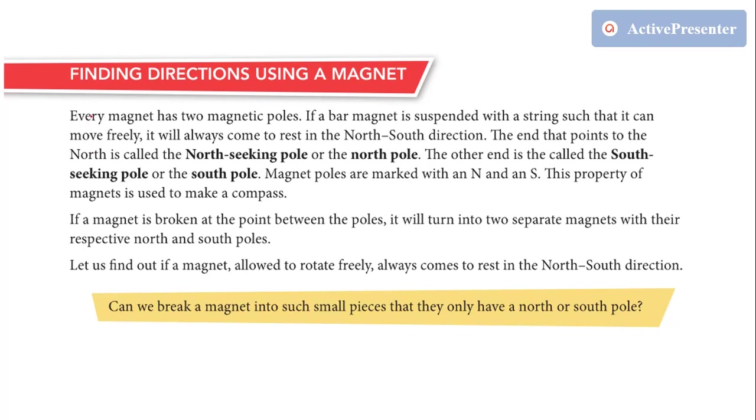Now let's move on to another topic, to find out the directions using a magnet. So we have seen that every magnet has two magnetic poles which are south pole and north pole. If we suspend a bar magnet with a string such that it can move freely, it will always come to rest in the north-south direction.